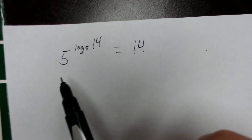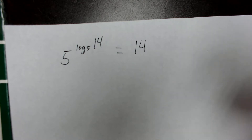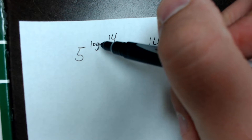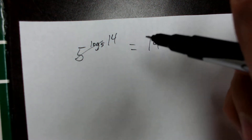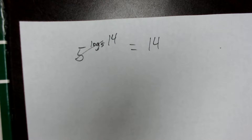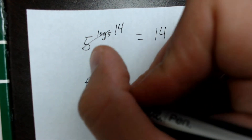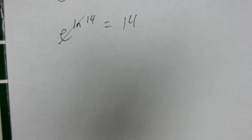Five to a number whose logarithm at base five is 14 just ends up being 14 — it's almost a redundant statement. The quick rule is: if you have a number raised to a logarithm whose base is the same as that number, they cancel out and you're left with the logarithm's argument as your answer. For example, e to the natural log of 14 — since natural log is just log base e — those cancel and equal 14.